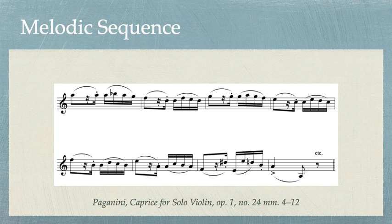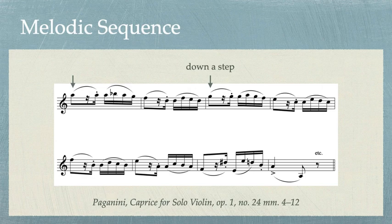Let's listen to this example from Paganini. Do you notice in the first system that the melody of the first two measures is repeated down a step in the third and fourth measure? We can compare the first notes of each of those measures to see that the interval is being repeated here at a second.